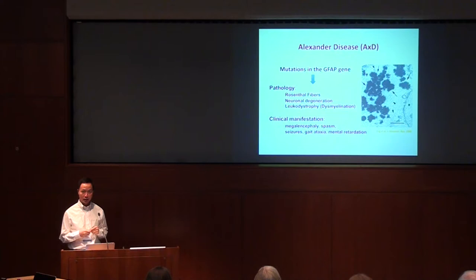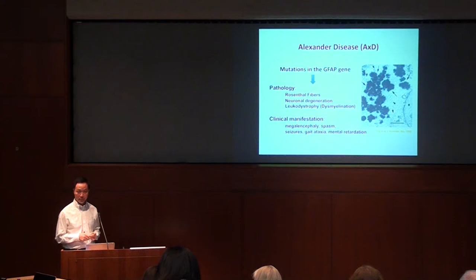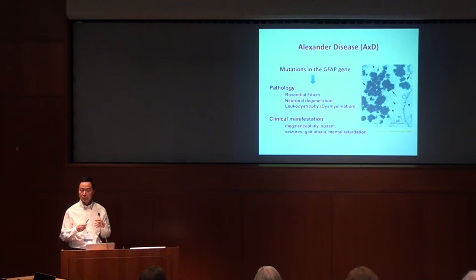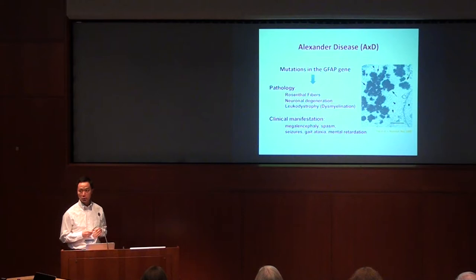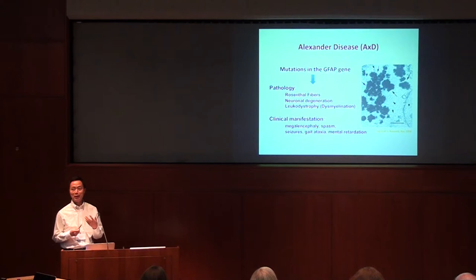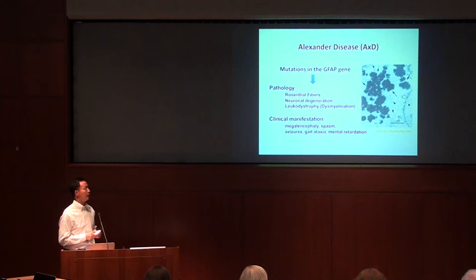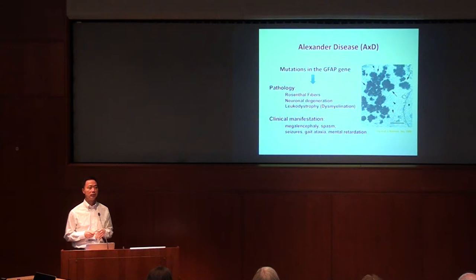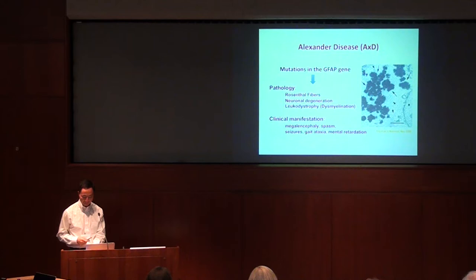We all know that Alexander disease is caused by mutation in the GFAP gene, going back to the pioneer work by Arby, James and others. And that mutation results in pathology in astrocytes, in particular protein aggregation. But not only in astrocytes — it also leads to changes in neurons and oligodendrocytes. So it's actually a global disease even though the mutation is only in one gene, in the astrocytes, and it leads to many different kinds of clinical manifestations depending on multiple factors.